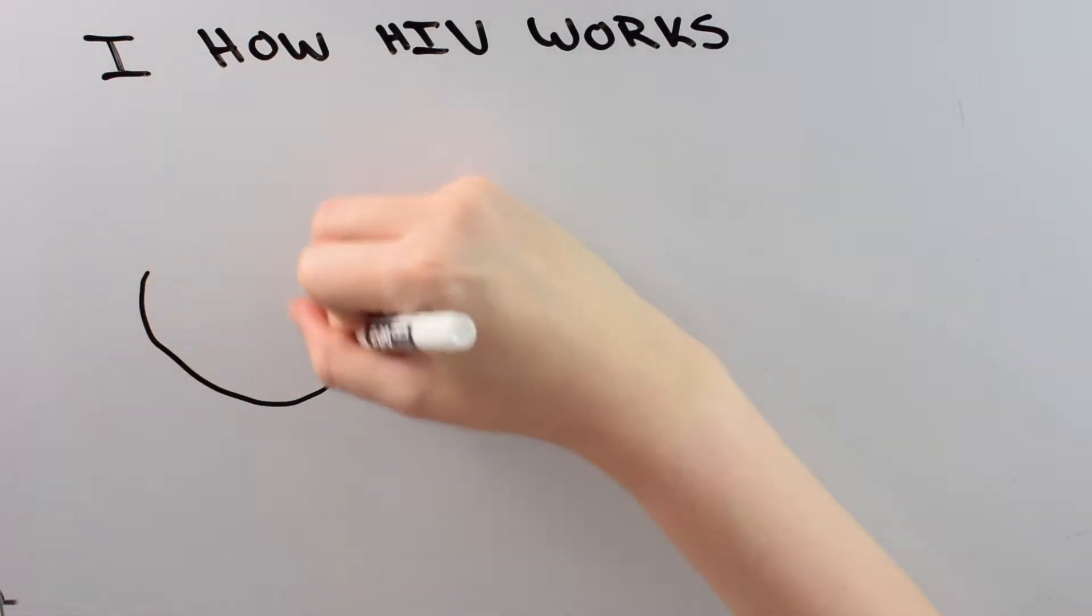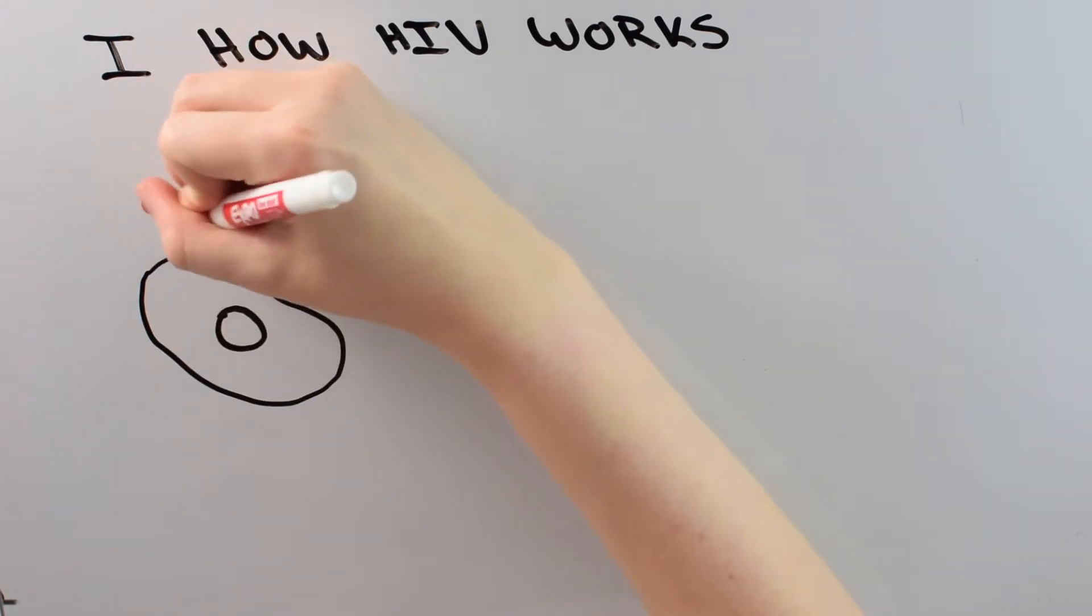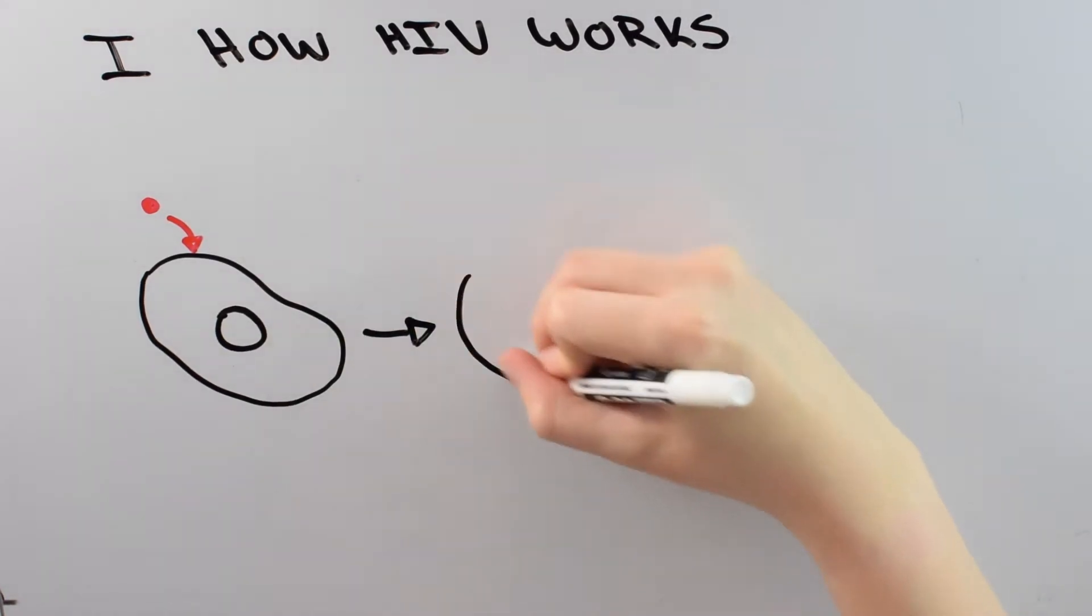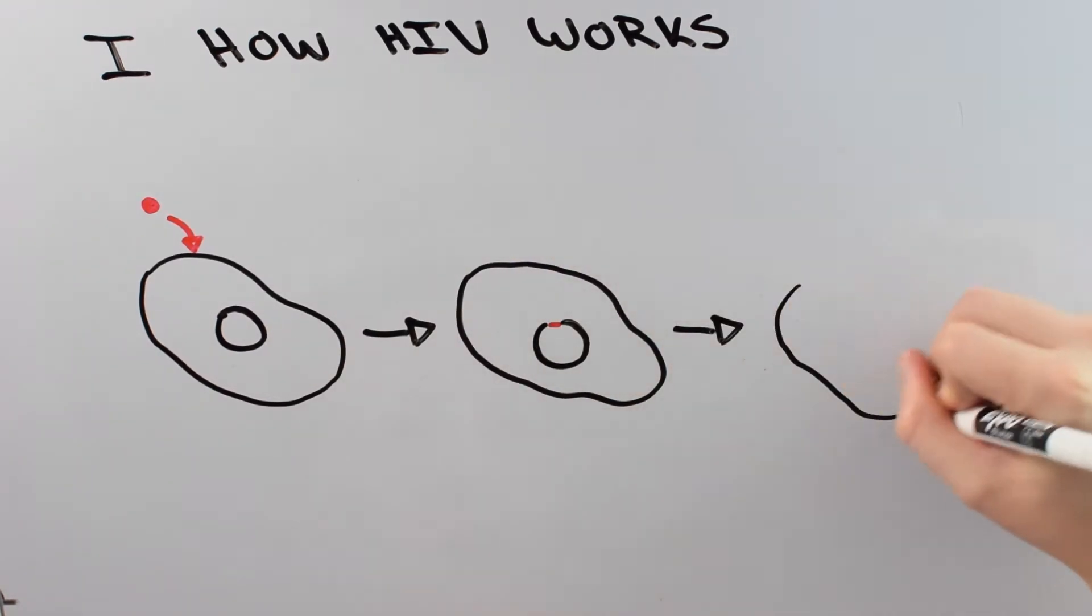So let's start with how HIV works. HIV infects immune cells in the body. So what happens is that HIV comes, attaches to an immune cell, and inserts its genetic information into the cell itself. That genetic information is then inserted into the DNA of the cell that has been infected. After that, HIV uses the cell machinery that's already in place to make more and more virus.